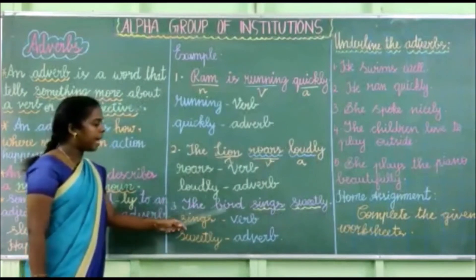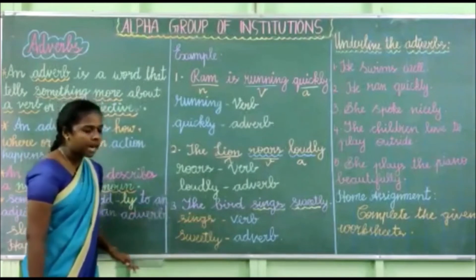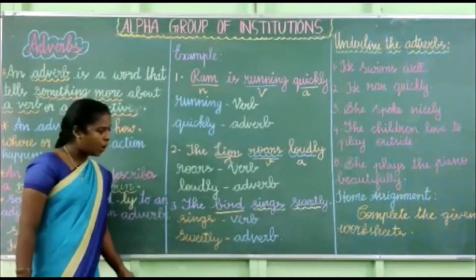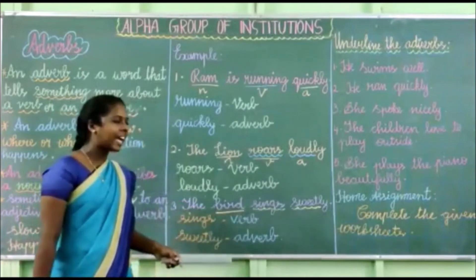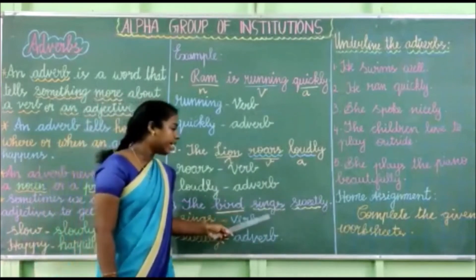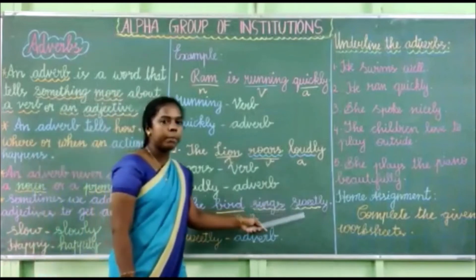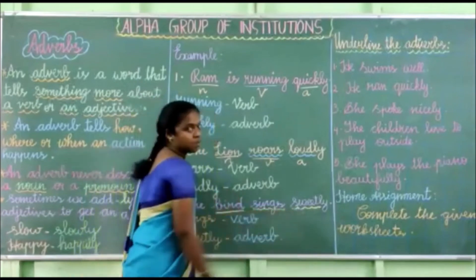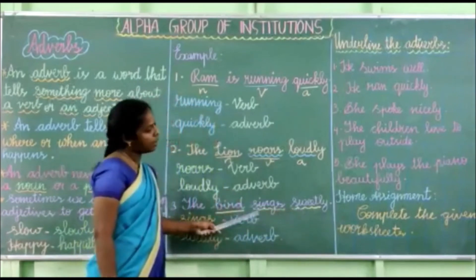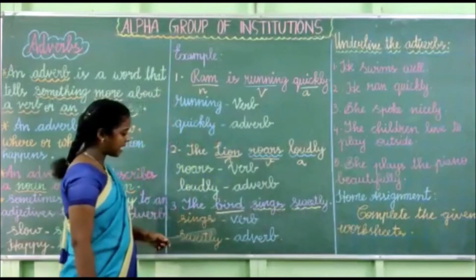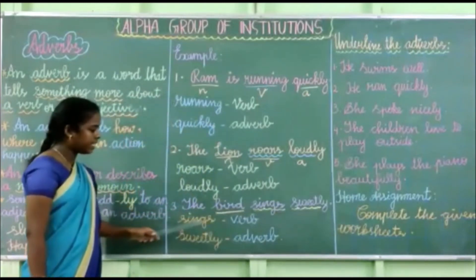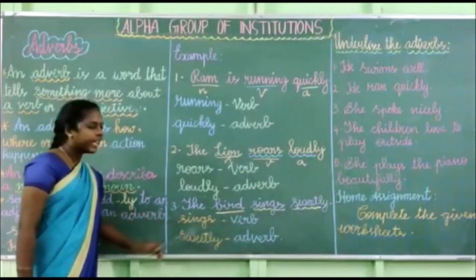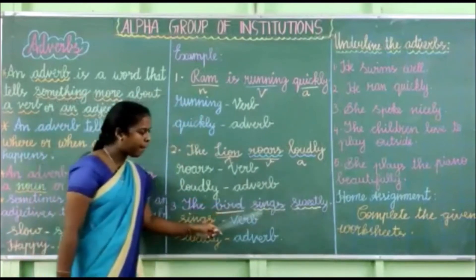Third example: The bird sings sweetly. The bird is a noun. Sings is the verb — it is the action. How does the bird sing? Sweetly. This word gives more information about the verb, so sweetly is the adverb.